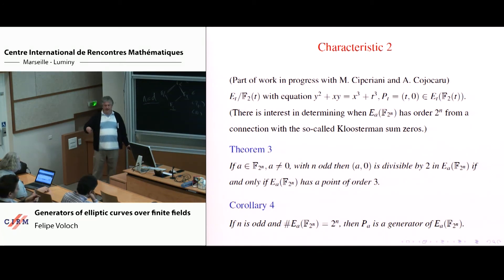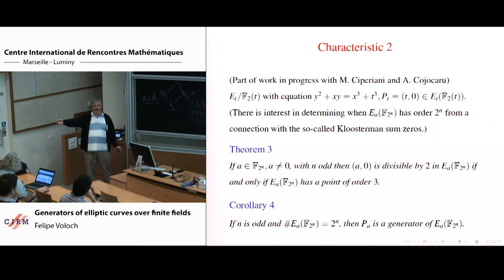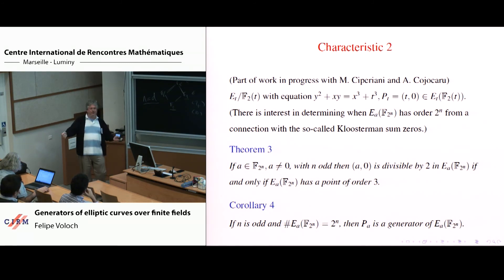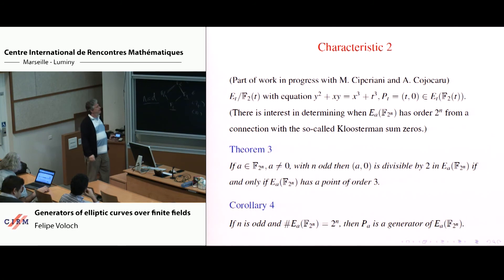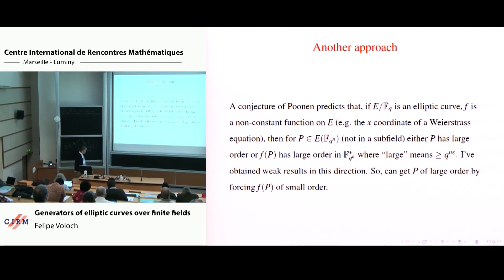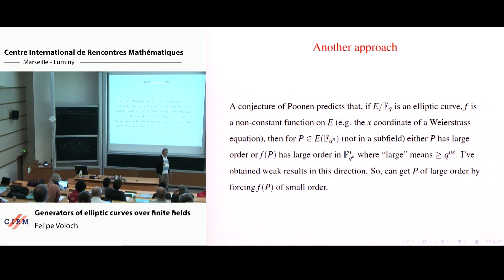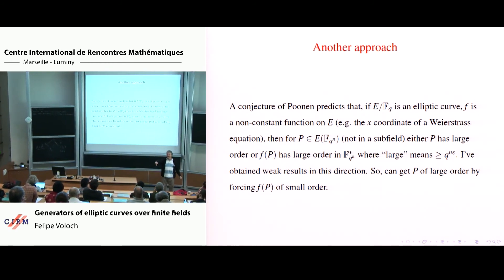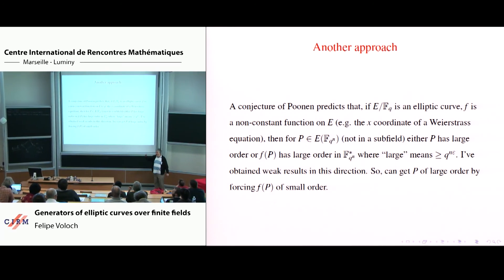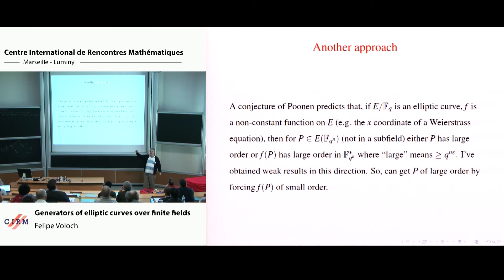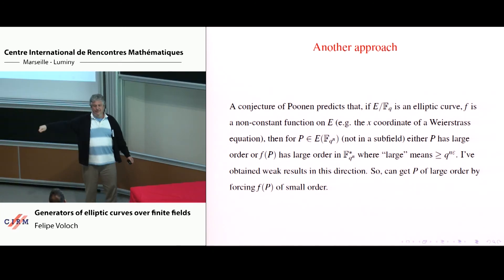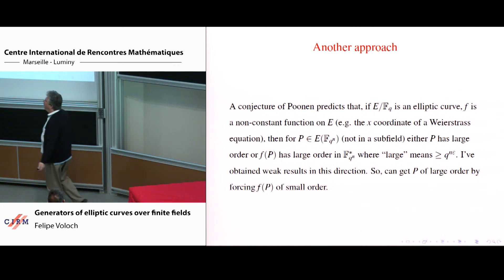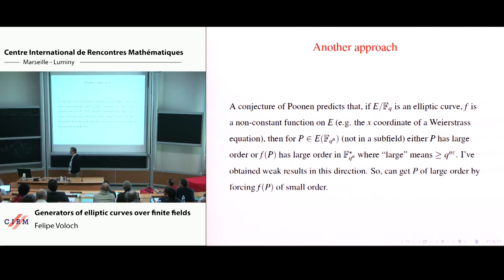Notice that order 2^n is the worst case scenario for picking a random element and checking if it's a generator — half are generators, half are not. Usually there are lots of generators; if the group has prime order, anything is a generator. So the first approach was to find a small subset containing a generator. The second was to find a formula giving a generator some fraction of the time. The third approach is: let's not try to find a generator, let's try to find a point of large order.